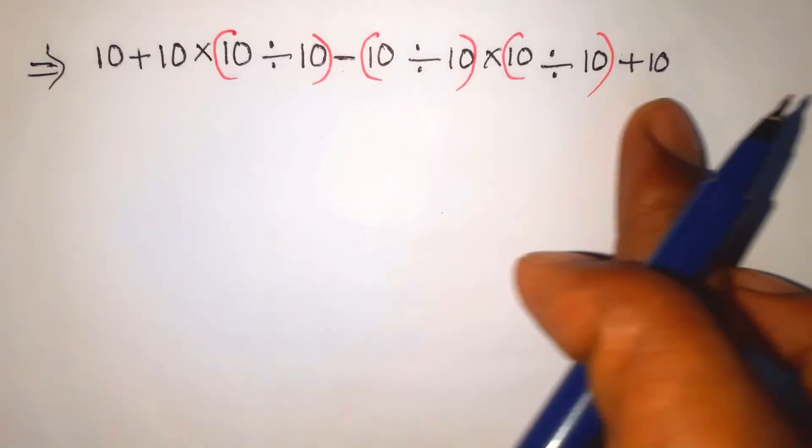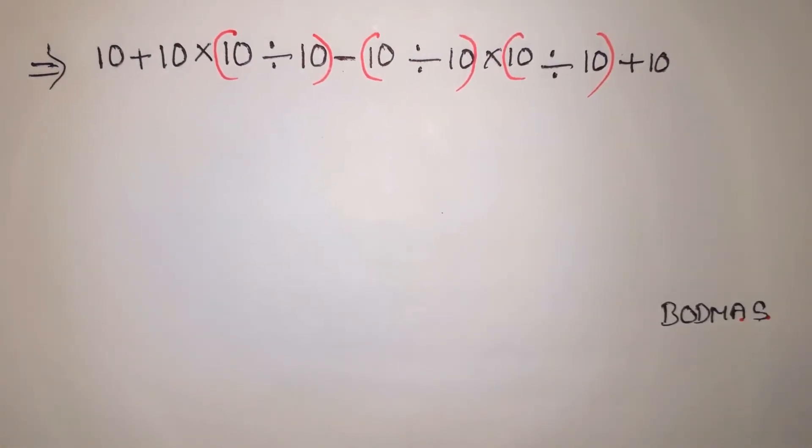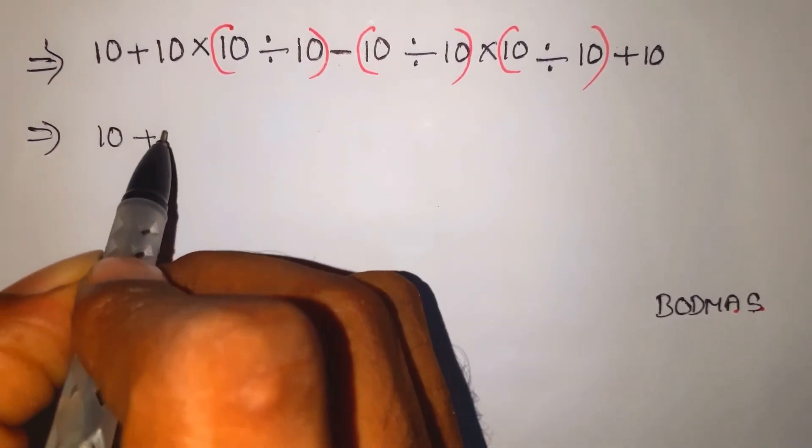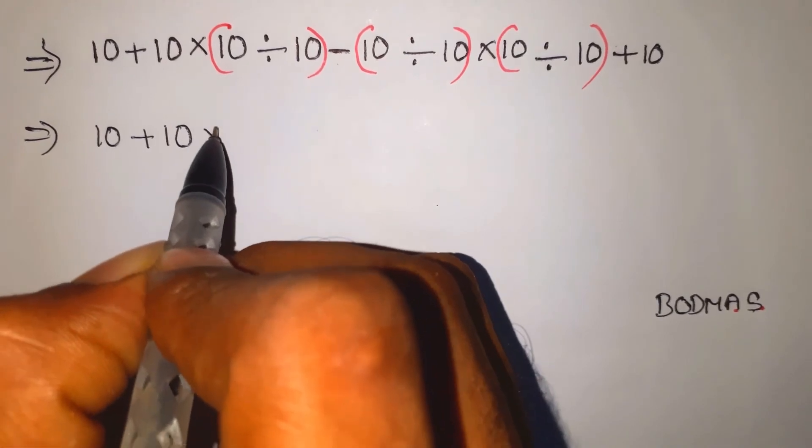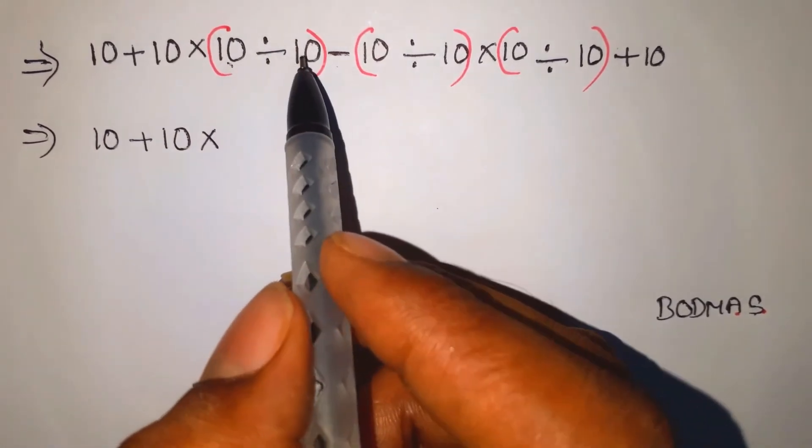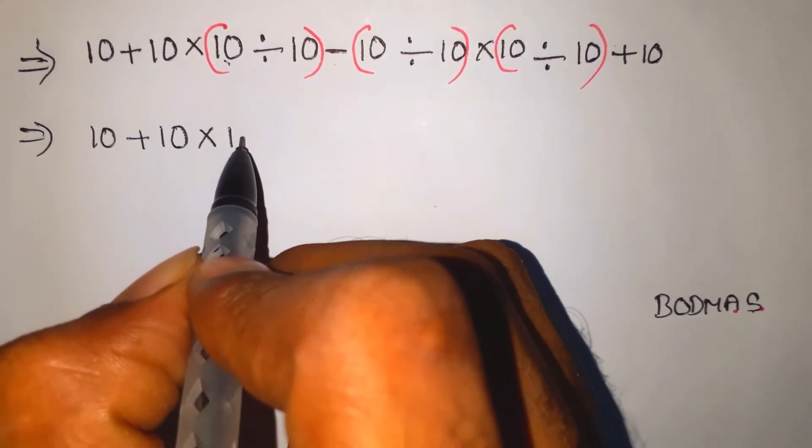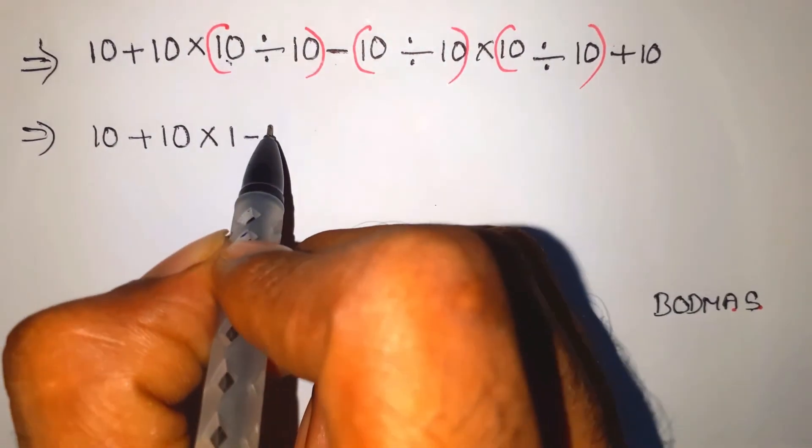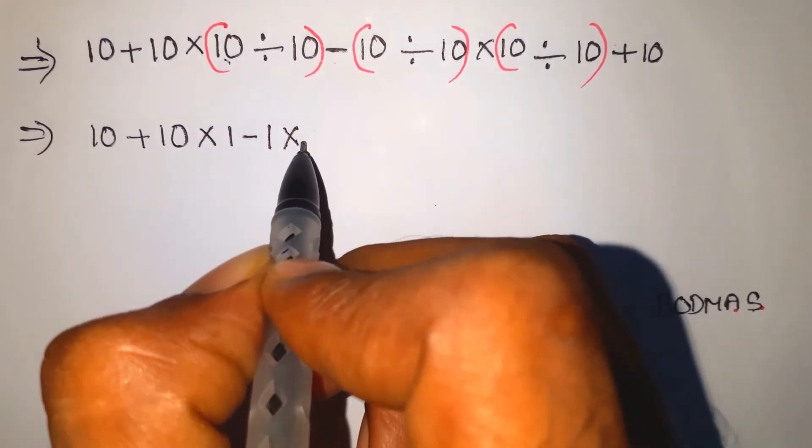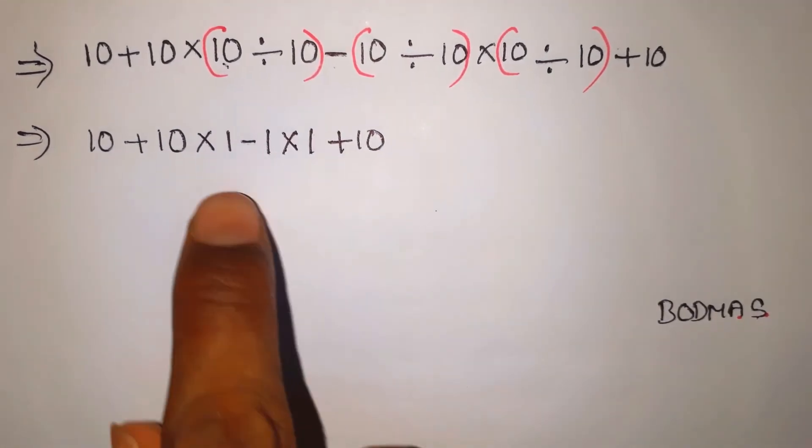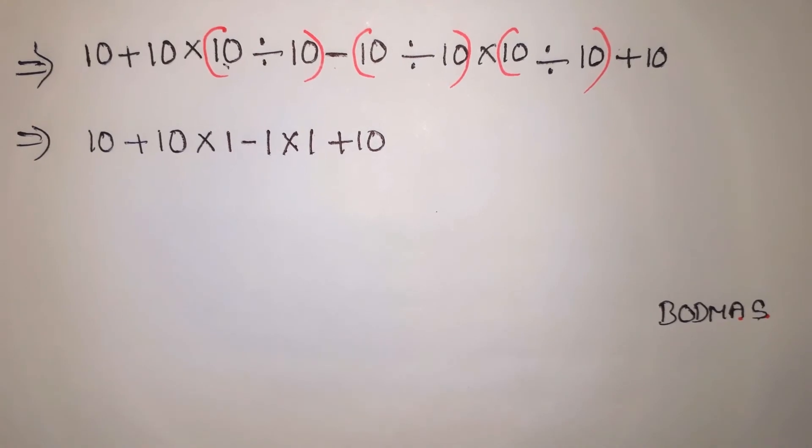First we choose the division values. So 10 plus 10 into 10 divisible by 10 equals 1. Minus 10 divided by 10 equals 1. Into 1, plus 10. So this is the value after division.